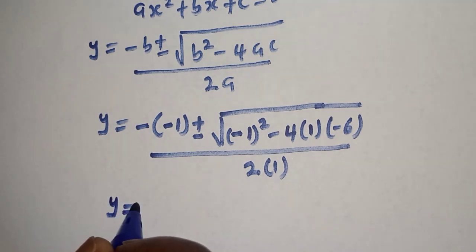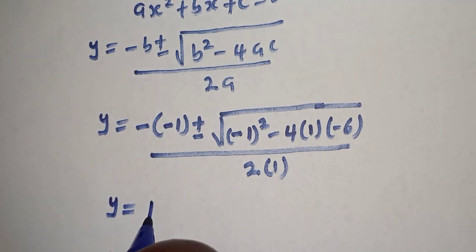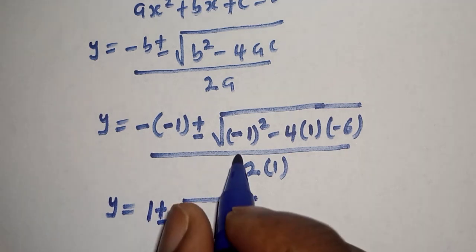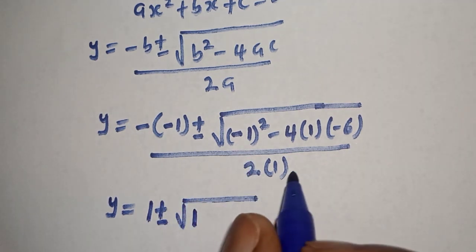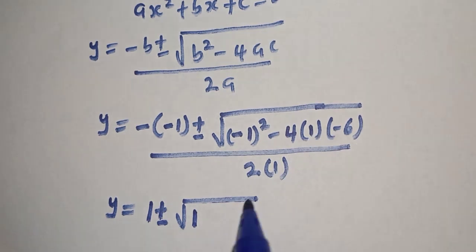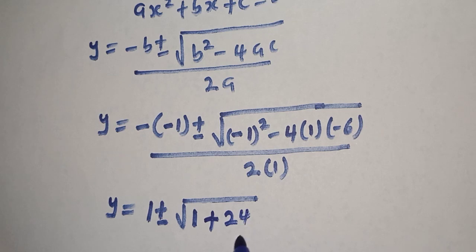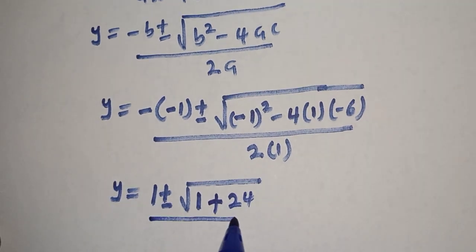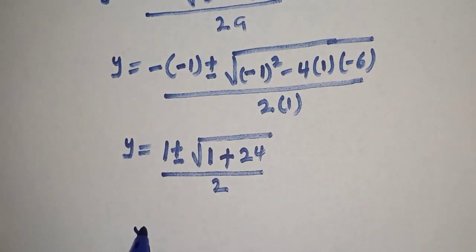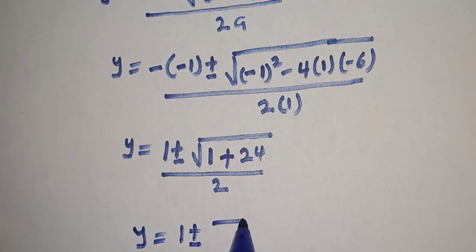This simplifies to y equal to 1 plus or minus square root of 1 minus 4 times 1 times minus 6, which is plus 24, over 2. So y equals 1 plus or minus square root of 25, over 2.